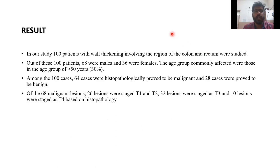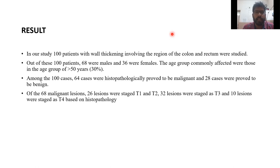In a study of 100 patients with wall thickening in all regions of the colon and rectum, 68 patients were male and 36 were female. The age group most commonly affected was above 50 years. Among these, 64 patients were histologically proven to be malignant and 28 cases were proven to be benign. Of the 64 malignant cases, 26 were stage 1 or 2, 32 were stage 3, and 10 lesions were stage T4 based on histopathology.